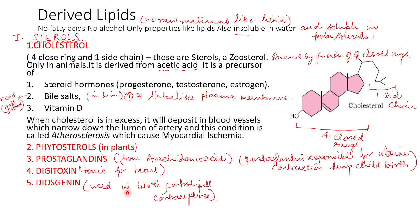Derived lipids contain no fatty acid and no alcohol, yet they are considered lipids because of their properties — specifically, their insolubility in polar solvents and solubility in non-polar solvents. The main example is sterols, of which cholesterol is the most important. Cholesterol is a zoosterol found only in animals, derived from acetic acid. It has four fused rings and a side chain, and serves as a precursor for steroid hormones, bile salts, and vitamin D.